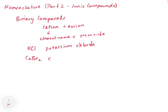In this case, the cation would be calcium and the anion would be bromide. So calcium bromide.